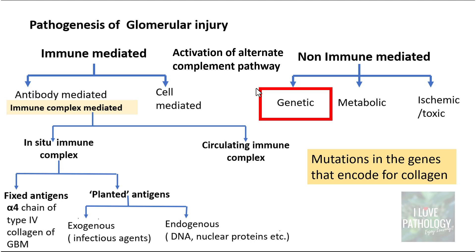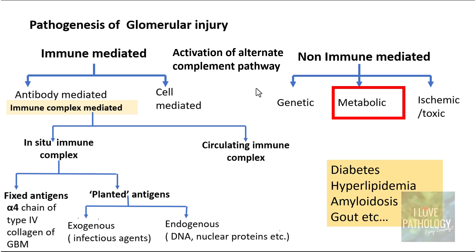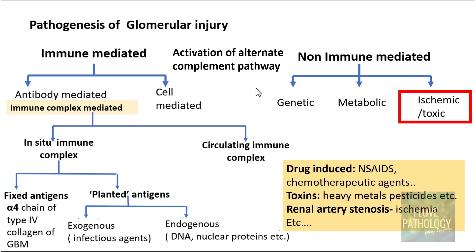Non-immune mediated causes include genetic causes such as mutations in genes encoding collagen of the glomerular basement membrane — for example Alport syndrome. Metabolic causes include diabetes, hyperlipidemia, amyloidosis, and gout. Ischemic or toxic causes include drug-induced injury from NSAIDs, chemotherapeutic agents, toxins like heavy metals and pesticides, and ischemia due to renal artery stenosis — all of which can directly result in glomerular injury and glomerulonephritis.